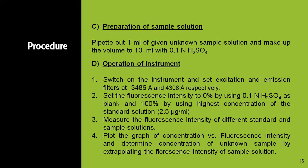To prepare the sample solution, pipette out 1 ml of the given unknown sample solution and make up the volume to 10 ml with 0.1 normal H2SO4. Now we have standard solutions and sample solution, and we are going to measure the fluorescence intensity first of the standard solutions and then the sample solution.